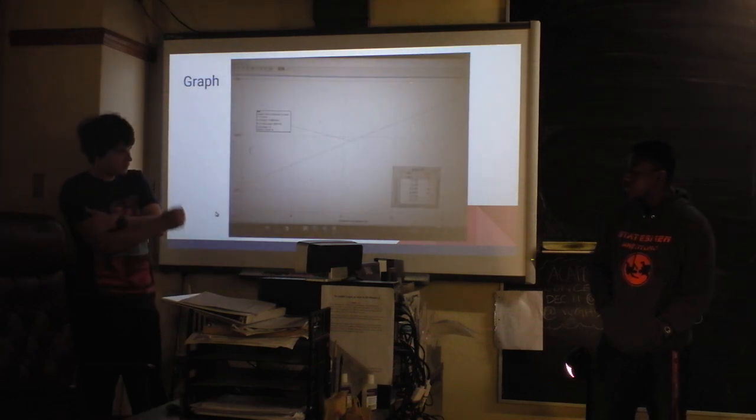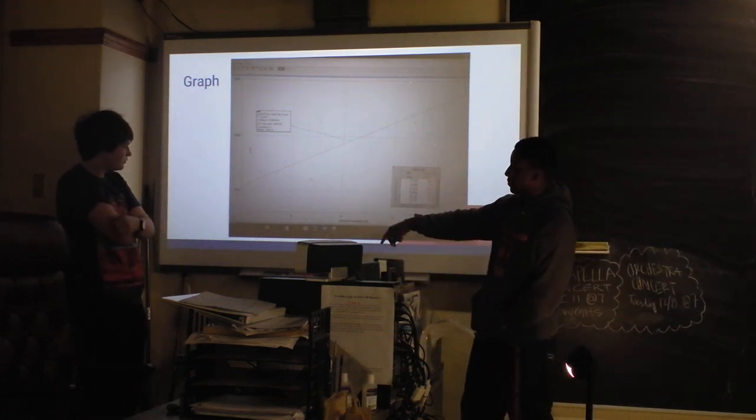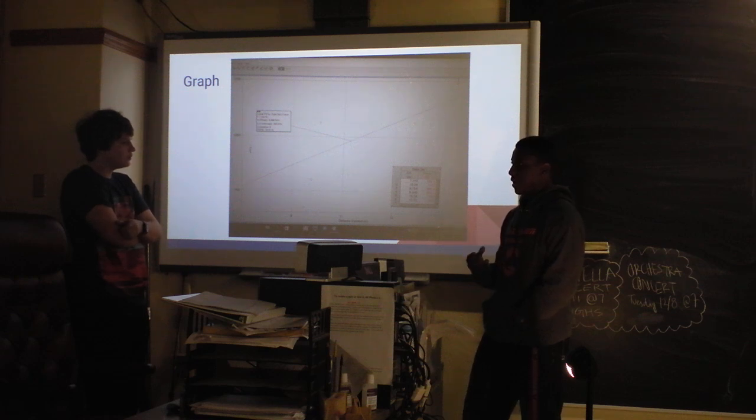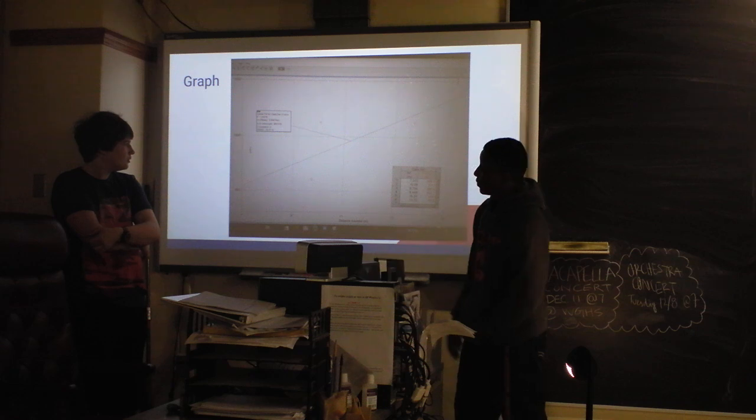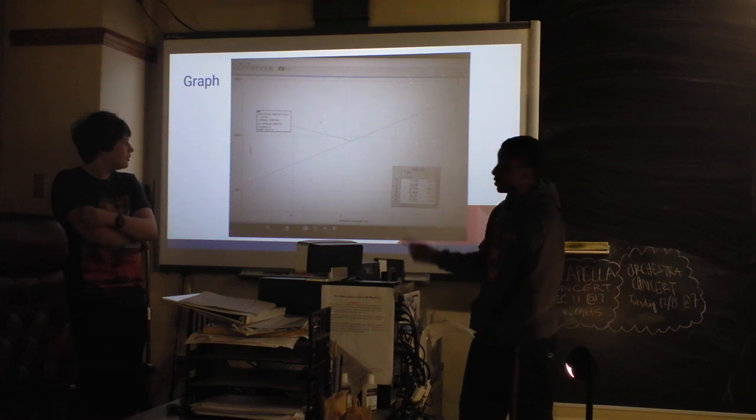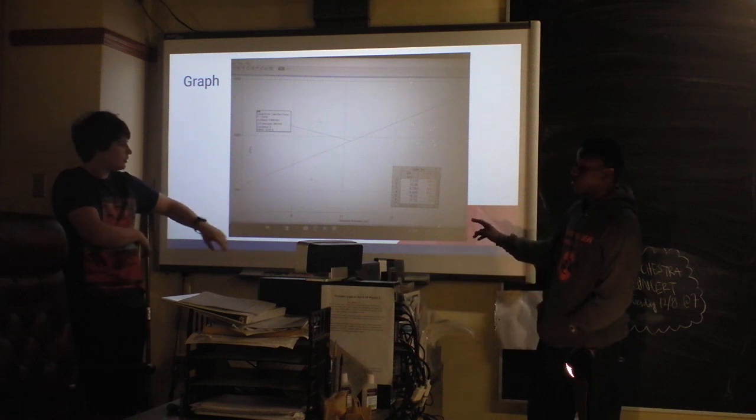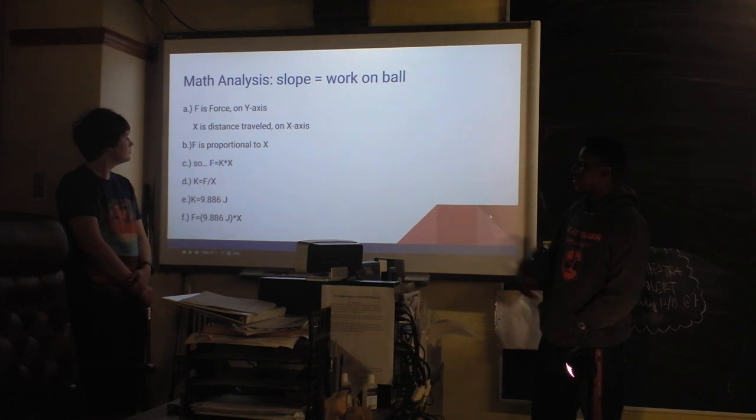This is our graph. As you can see, our data is very different, and we blame that on the ball not being perfect, having the liquid in it to prevent it from bouncing. We put a linear fit on it and got a slope of 9.86, and we used that as our experimental value. Our accepted value was almost a factor of 10,000 times greater. We had a huge error.